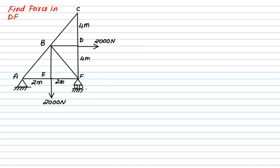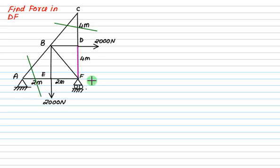Now we are given a second truss and we want to find out the force in member DF. Step one is to highlight the member of interest. So highlight member DF. Now evaluate potential section planes — the first two choices are wrong because they are not cutting the required member DF.